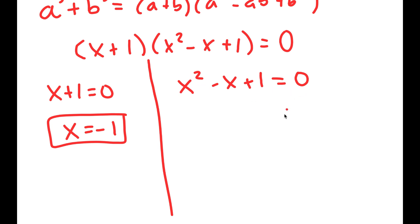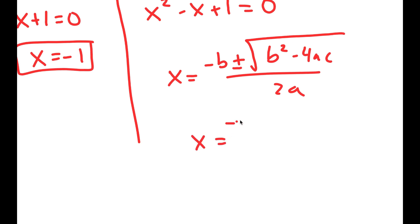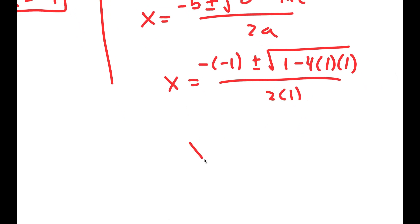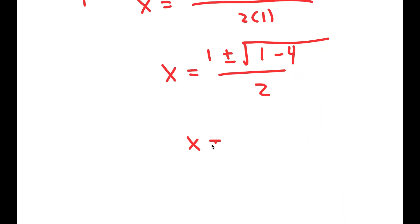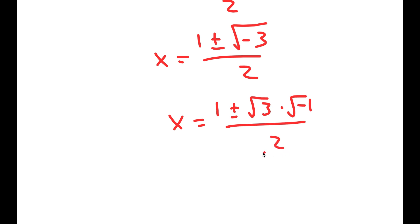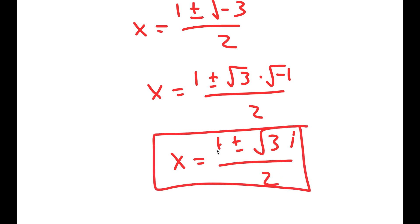For x squared minus x plus 1 equals 0, I use the quadratic formula. I get x equals negative of negative 1, plus or minus the square root of negative 1 squared, which is 1, minus 4 times 1 times 1, all over 2 times 1. This simplifies to 1 plus or minus the square root of negative 3, all over 2, which equals 1 plus or minus the square root of 3 times i, all over 2. So these are two more solutions.